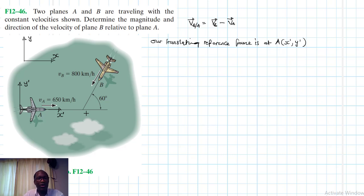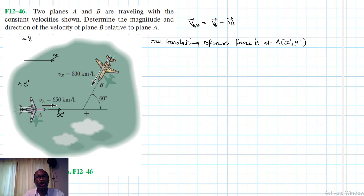Because x-prime and y-prime are translating with no change in direction, our relative velocity VB/A will only account for the change in magnitudes — no change in direction, only change in magnitudes.